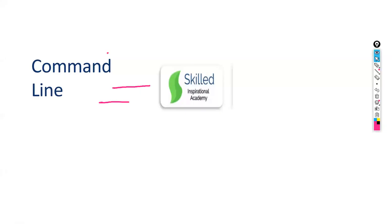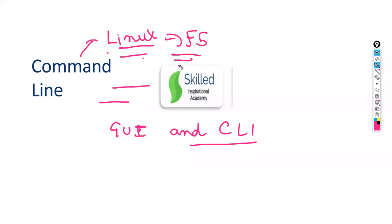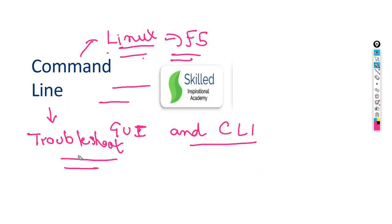Today's first topic is command line in F5. There are two things in F5: one is GUI and one is CLI. Command line is basically based on Linux, so everything on F5 is based on Linux. You should know some Linux commands which will help you troubleshoot different issues in your production environment.